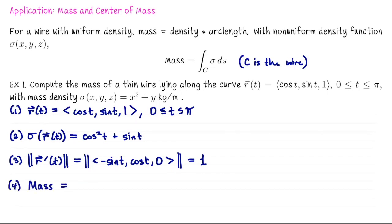Now we have all the pieces we need to set up the integral. The mass of this wire is the integral from 0 to pi, sigma of r of t, so cosine squared t plus sine t times the speed, which in this case is just 1, dt. To integrate cosine squared I'm going to use the power reducing formula. We can write this as the integral from 0 to pi of 1 plus cosine 2t divided by 2, and then I'll go ahead and anti-differentiate the second term. The anti-derivative of the second term would be minus cosine of t evaluated at pi, subtract off evaluating at 0.